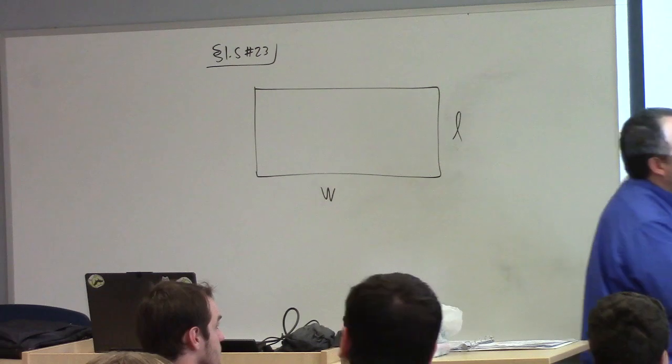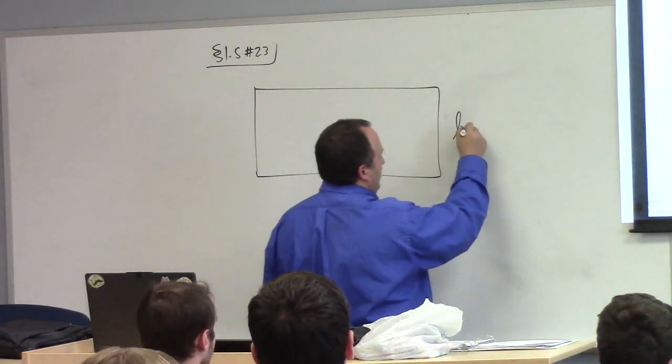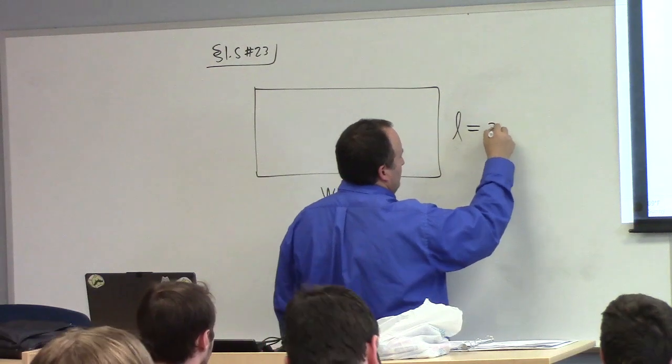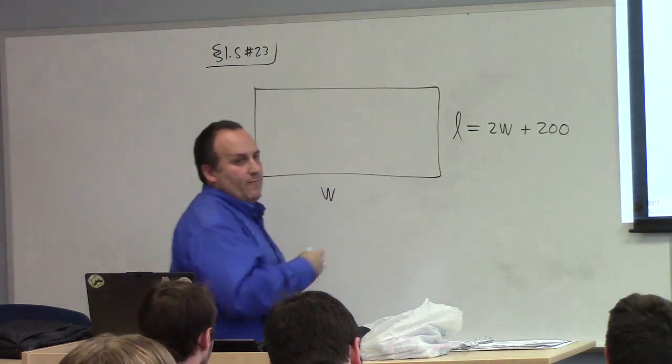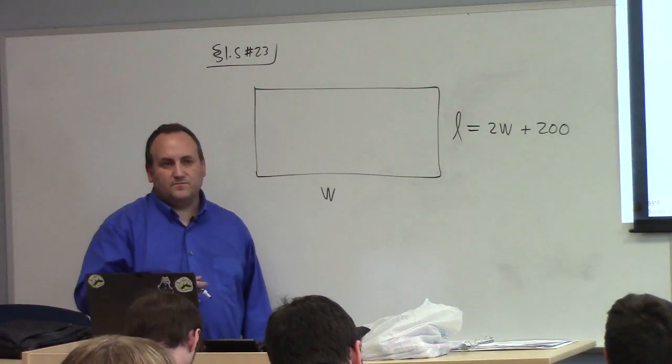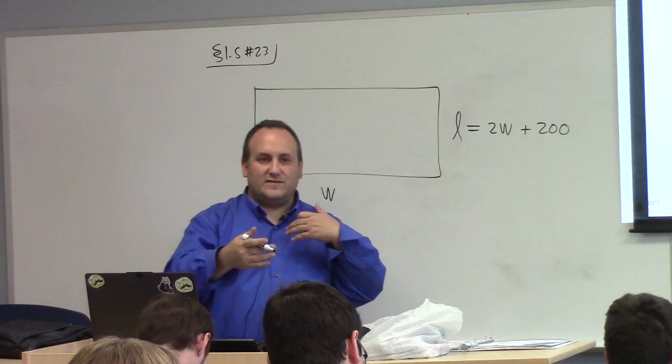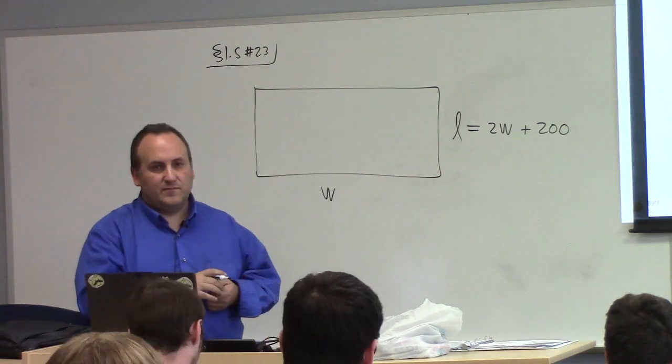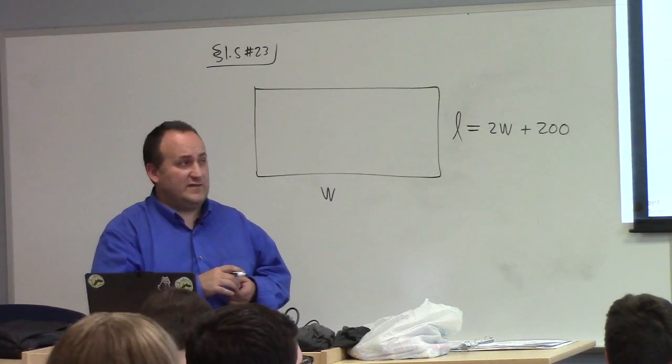All right, so what do we know? Length is 200 more than twice the width. So L is equal to twice the width plus 200. That's the first thing you need to do. You need to convert that sentence to an appropriate mathematical equation. That's most of the problem.